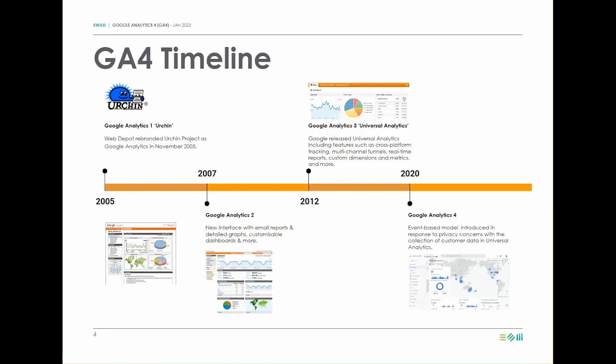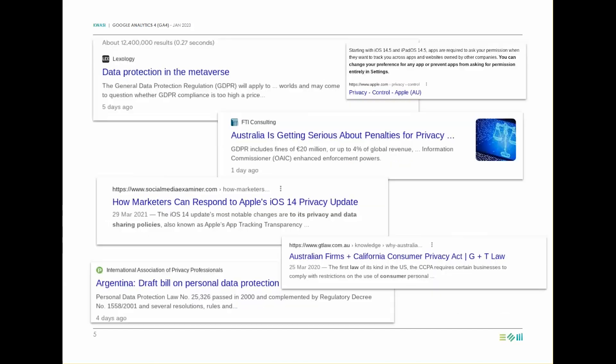In 2020, Google introduced the all-new Google Analytics 4 in response to privacy concerns with the collection of customer data in Universal Analytics. This platform unifies the best aspects of Google's mobile analytics and Universal Analytics for better management of data. Some great features include its event-based model compared to sessions, cookie-less measurement, conversion and behavioral modeling, just to name a few.